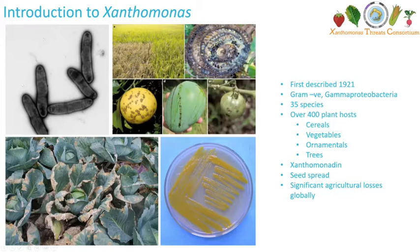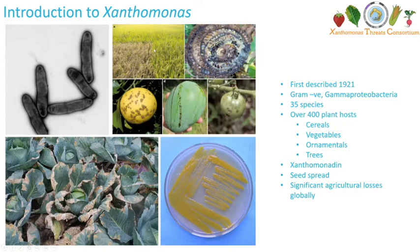There are at least 35 described species of Xanthomonas — as we'll discuss in a moment, the taxonomy and classification is a little bit in flux. These 35 species have been known to infect over 400 plant hosts including cereals, vegetables, ornamentals, and trees. You can see examples here: Xanthomonas infection of rice by Xanthomonas oryzae, banana plants, citrus plants, mango fruits, tomato, and of course the very famous Xanthomonas campestris infection of brassicas.